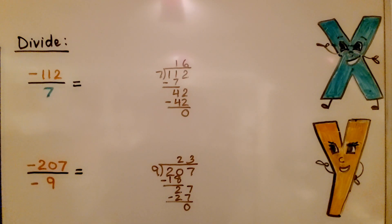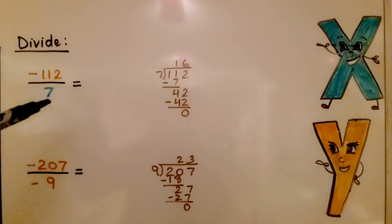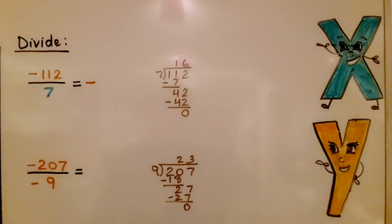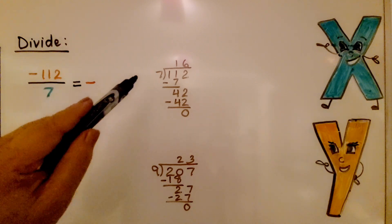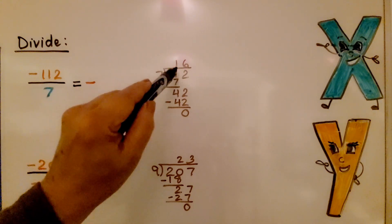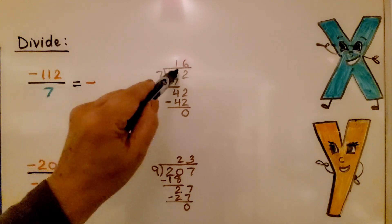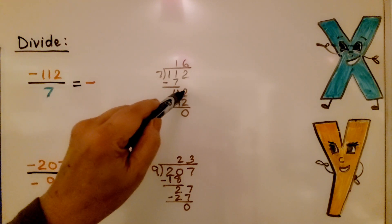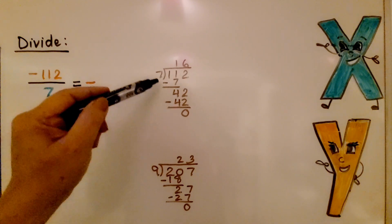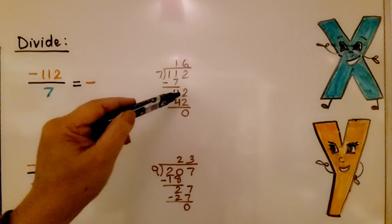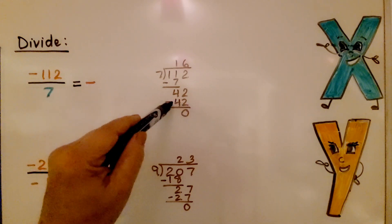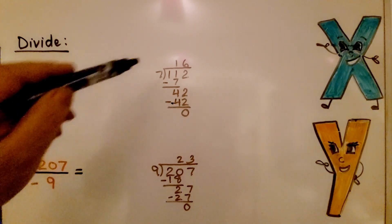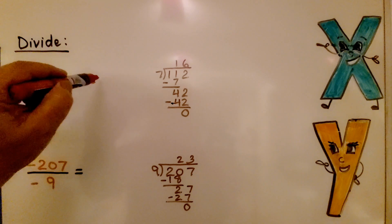Here we need to divide negative one hundred twelve by seven. They have unlike signs — a negative and a positive — so we know right away this is going to be negative. We do one hundred twelve divided by seven: seven can't fit into one, seven fits into eleven one time, seven times one is seven, subtract to get four, bring down the two. Seven fits into forty-two six times, because seven times six is forty-two. Subtract to get zero. The quotient is sixteen, so the answer is negative sixteen.